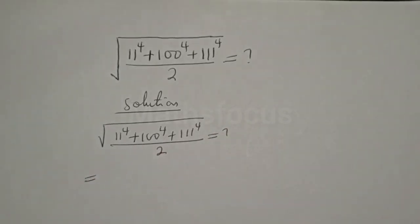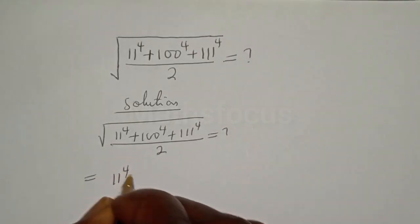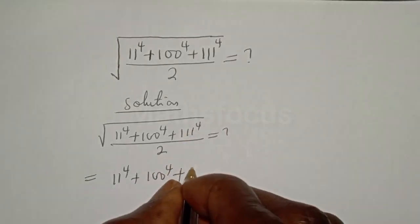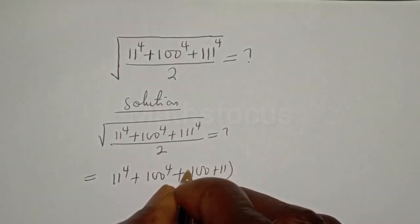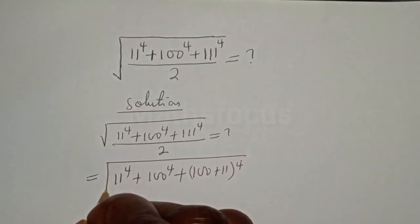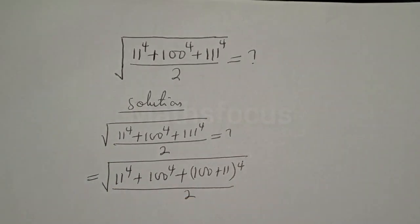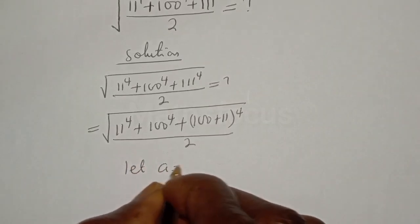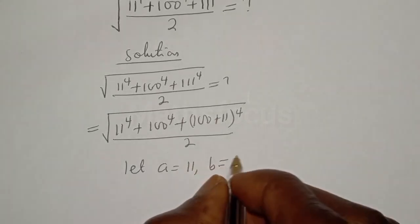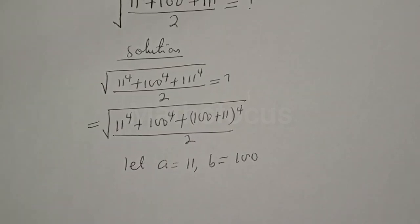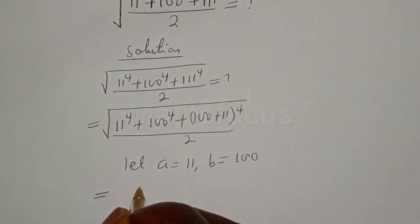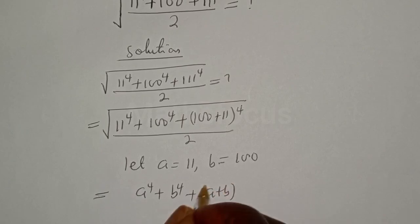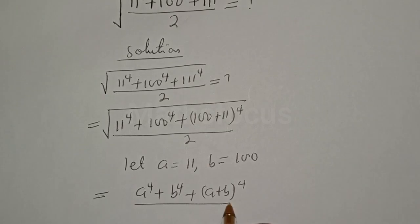This equals the square root of 11 raised to power 4, plus 100 raised to power 4, plus 111 raised to power 4, where 111 can be written as 100 plus 11 to the power of 4, everything over 2. Let a equal 11 and b equal 100, so this becomes a⁴ plus b⁴ plus (a plus b)⁴, over 2.